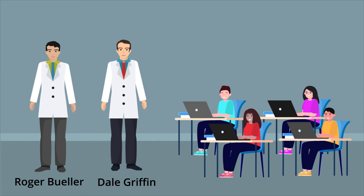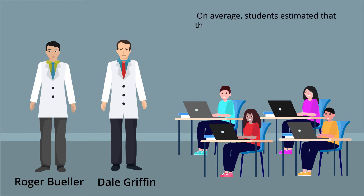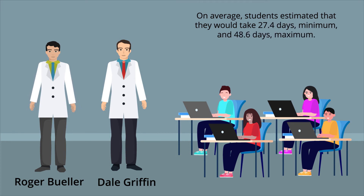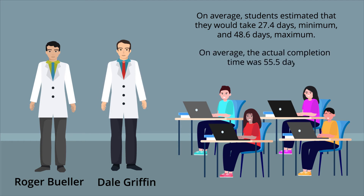On average, these students estimated that they'd finish in 33.9 days. Buehler and Griffin then asked the students to approximate the absolute minimum and maximum time they could possibly need for their senior thesis. The average estimate was 27.4 days for the minimum time and 48.6 days for the maximum time. However, a majority of the students exceeded even the maximum time limit that they had given themselves. The actual completion time of the senior thesis was 55.5 days on average.